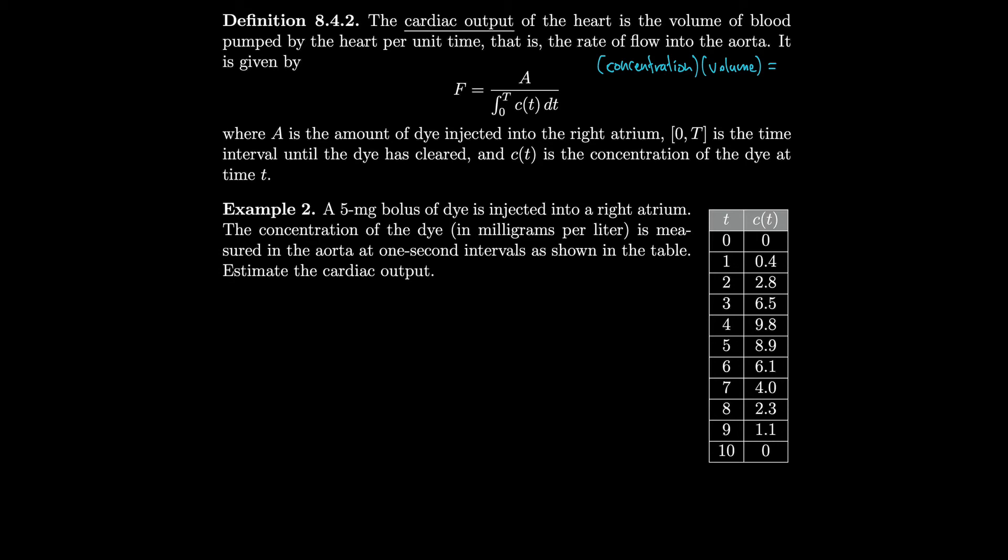That integral is equal to the total amount of dye injected into the right atrium. So that means that this concentration at a certain time interval c(t_i) times volume, which is our cardiac output, the flow F times delta t, because our rate times time, the time will cancel and just leave us with volume. So that means that the total amount of dye A is equal to the integral from 0 to T of c(t) times F dt.